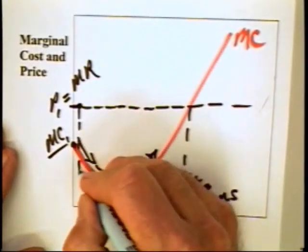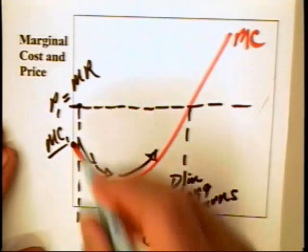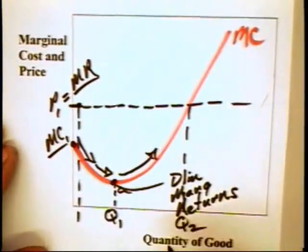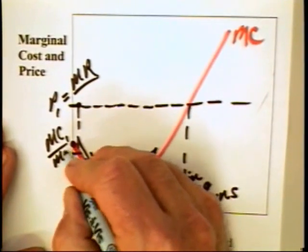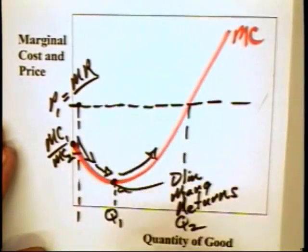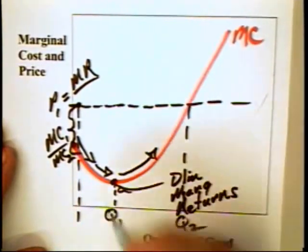On the first unit, the firm gets a price of P1, adds revenue equal to P1. The marginal cost is down here, MC2. And, of course, the firm makes a profit equal to that one on that particular unit.